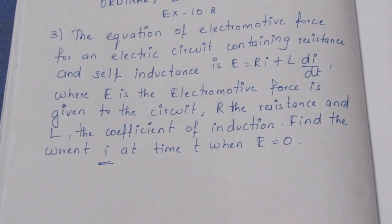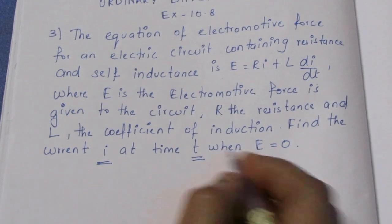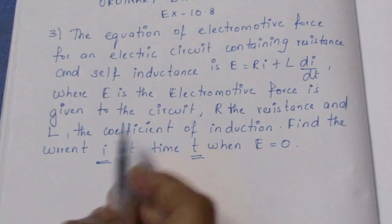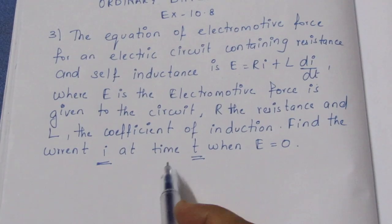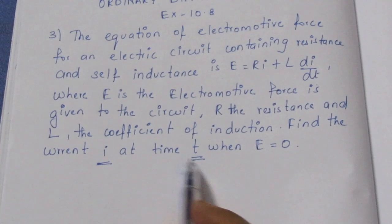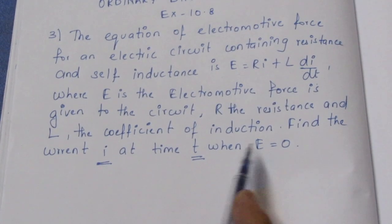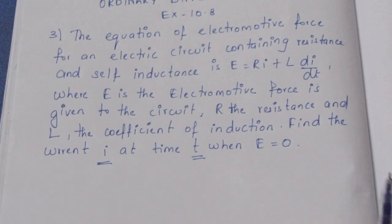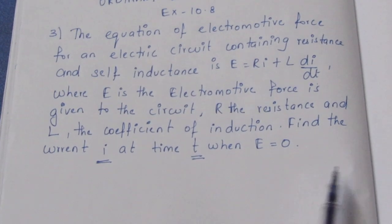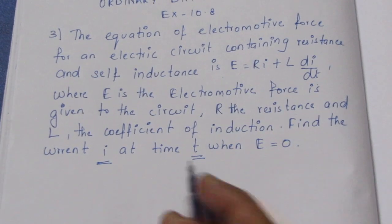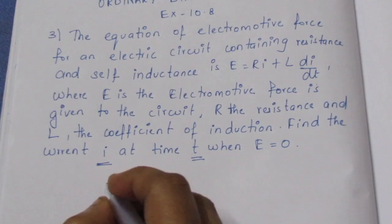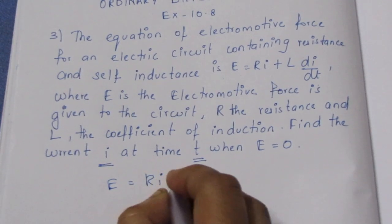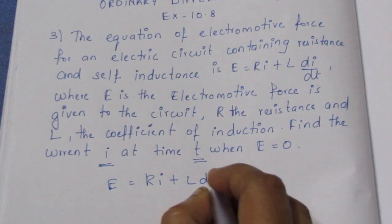We need to find current i at time t when E is equal to 0. When electromotive force is 0, what we need to find is E equal to 0, which gives us Ri plus L di by dt.